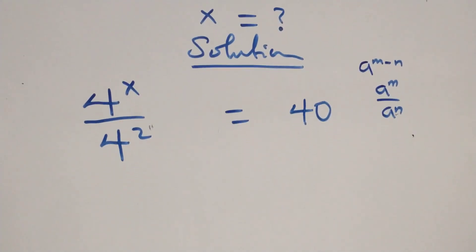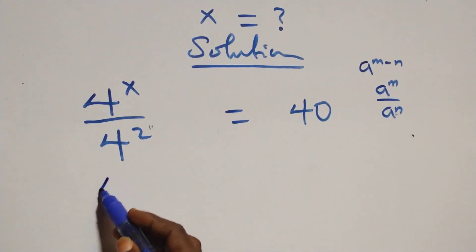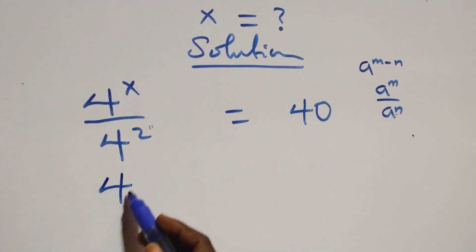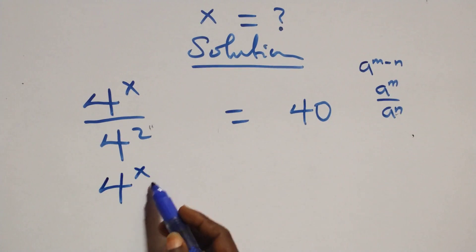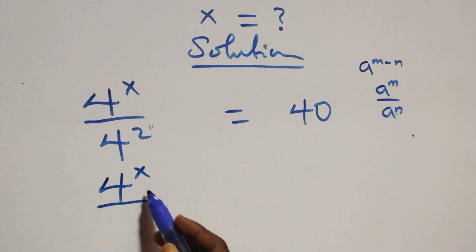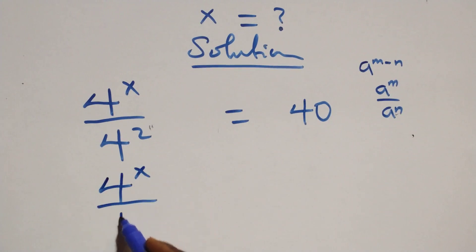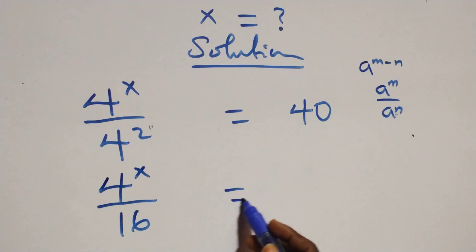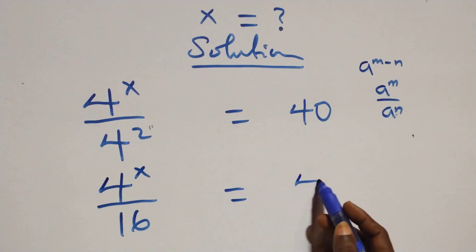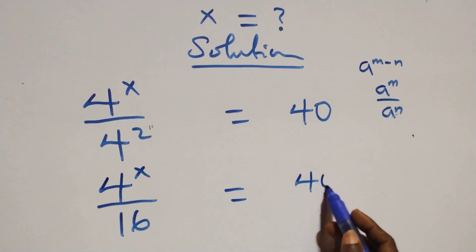The next step: I'll write this as 4 raised to power x over 4 squared. Now 4 times 4 is 16, and on the other side we can write this as 40 over 1.